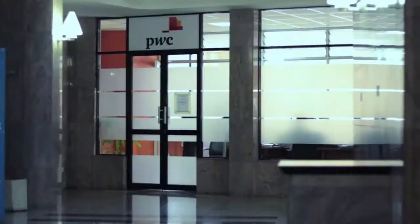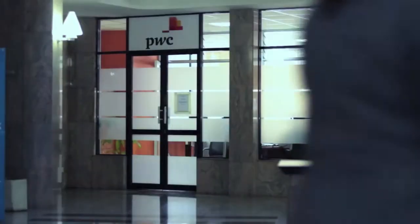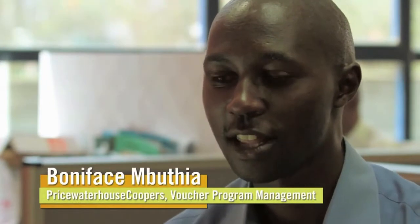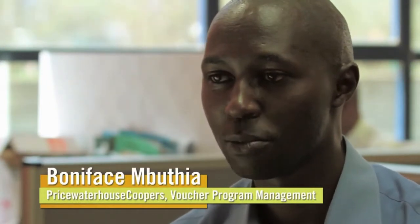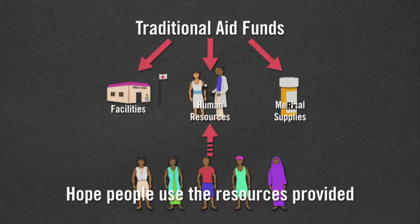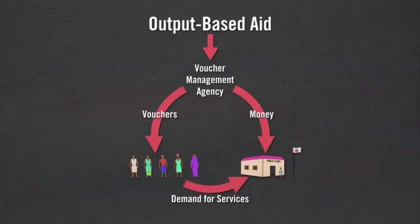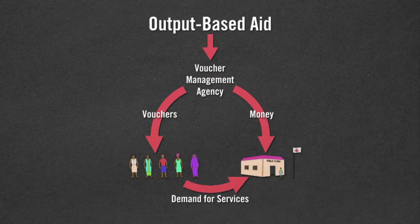OBA stands for output-based approach. This is a healthcare financing model that allows donor funds to be directed towards specific outputs. So unlike other models of aid, we pay for services that have been rendered and not for inputs as the previous models existed.